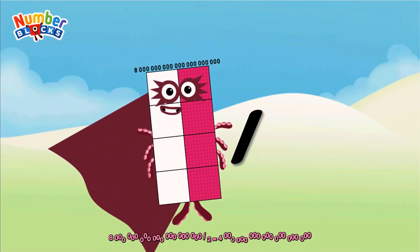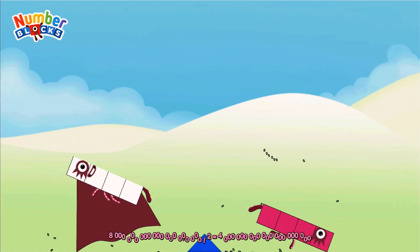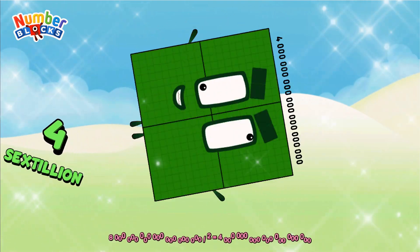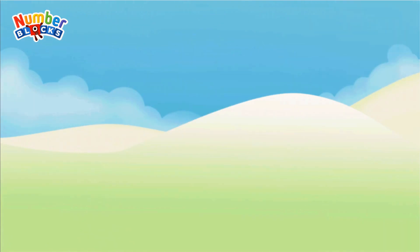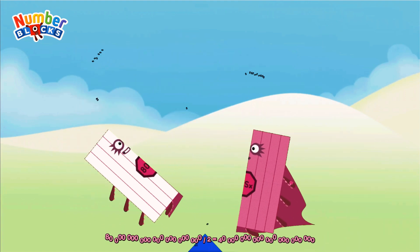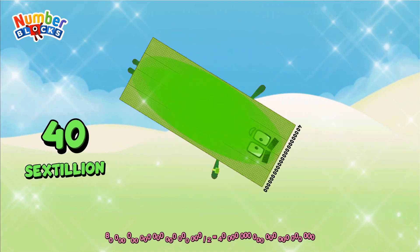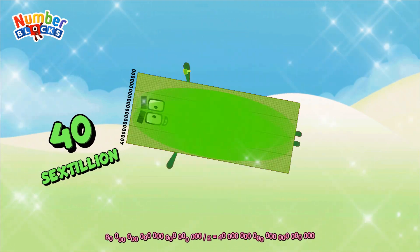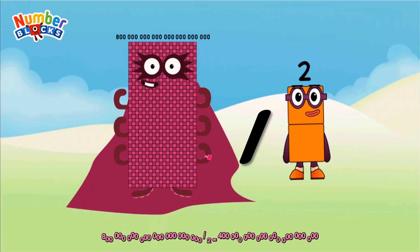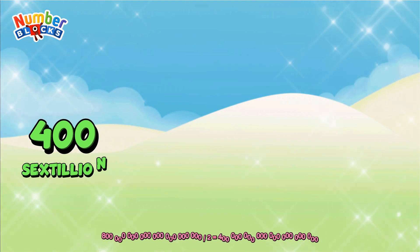Eighty-six-dillion divided by two equals forty-six-dillion. Eight-hundred-six-dillion divided by two equals four-hundred-sextillion.